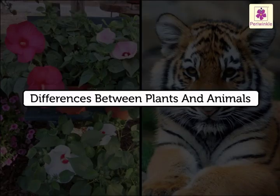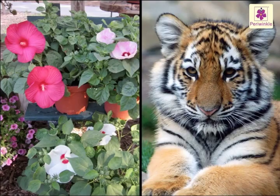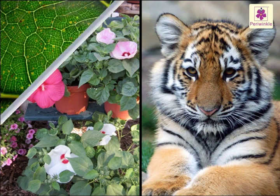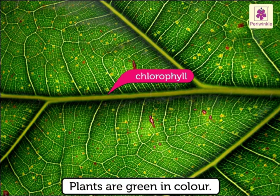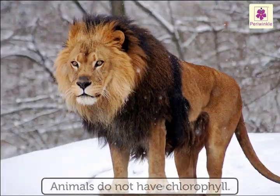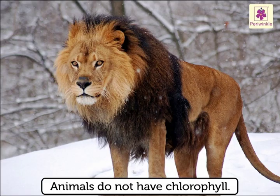Differences between plants and animals: There are basic differences between plants and animals too. First, due to the presence of chlorophyll, plants are green in color. Animals do not have chlorophyll.